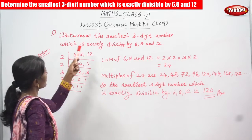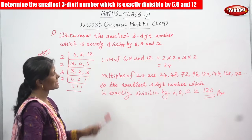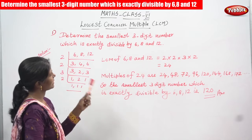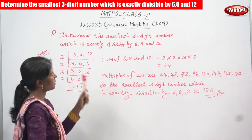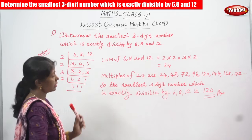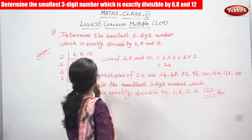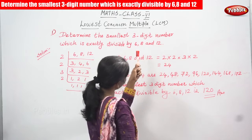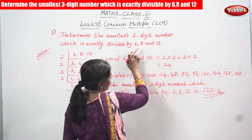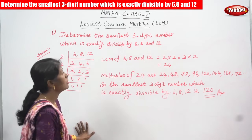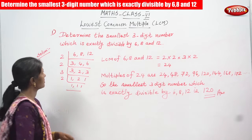We are going to determine the smallest three-digit number which is exactly divisible by 6, 8, and 12. To solve this, we are going to find the lowest common multiple (LCM) of these numbers. LCM means lowest common multiple.